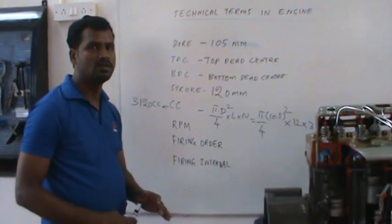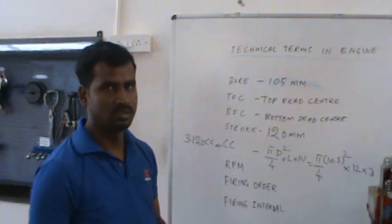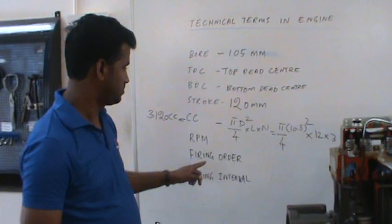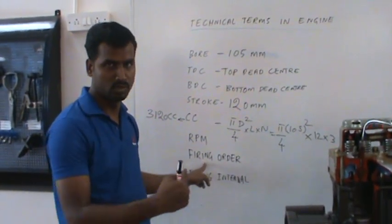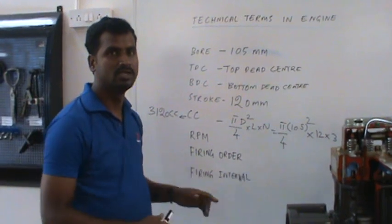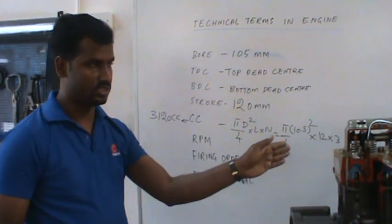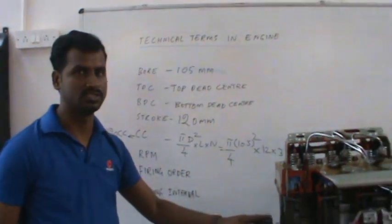Next one is the firing order. This is a three-cylinder engine. A single-cylinder four-stroke engine will have a firing order of 1 only, but at an interval of 720 degrees. In this case, the firing order of this engine is 1, 2, and 3.